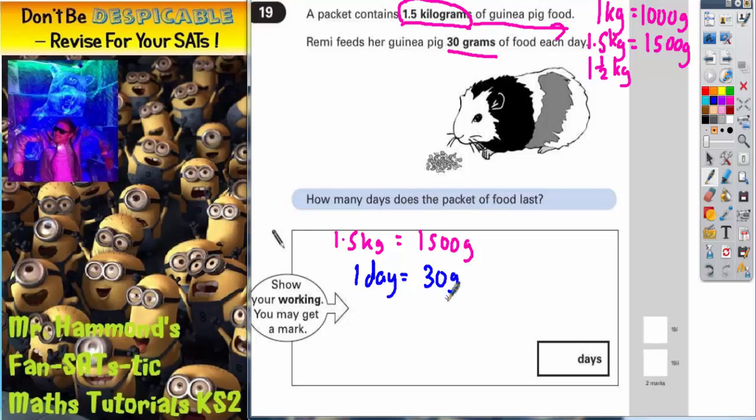But if we start counting up in 30s it will take us a long time. So the little trick we can do here is to say that if one day is 30 grams then 10 days, 10 lots of that would be 10 lots of 30 which would be 300 grams. So 10 days would be 300 grams.